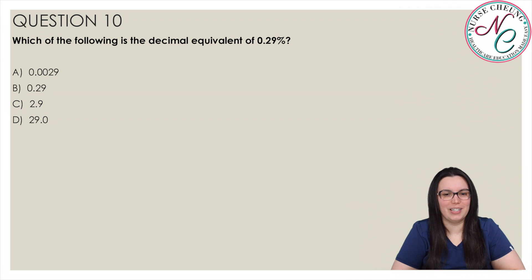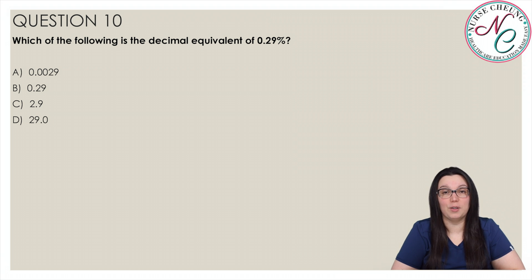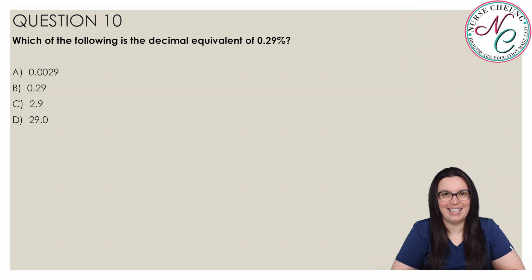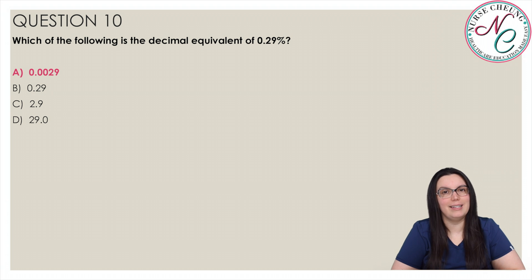Moving on to our last question: which of the following is the decimal equivalent of 0.29%? Is it A, 0.0029; B, 0.29; C, 2.9; or D, 29? The correct answer is A, 0.0029. To convert a percentage to a decimal, we move the decimal point to the left two places: 0.29% becomes 0.0029.